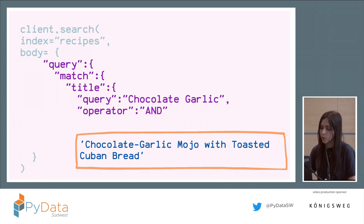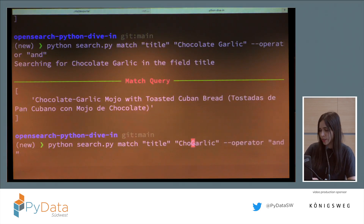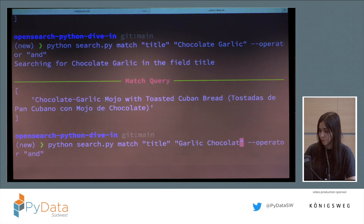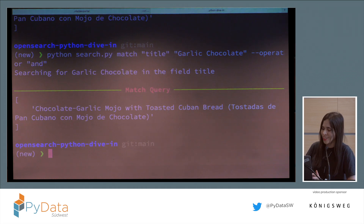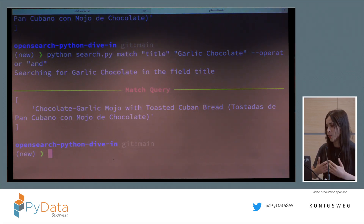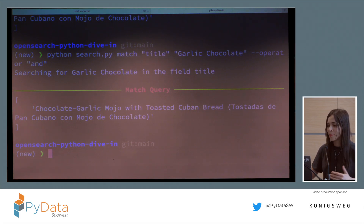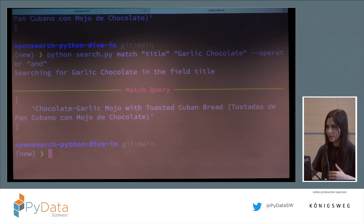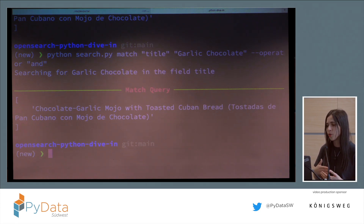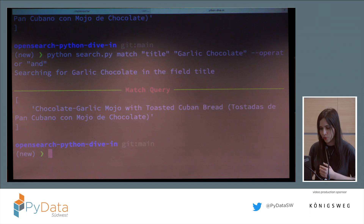Coming back to the code: if we swap the positions of garlic and chocolate, we can see that match does not care about the order of words. But sometimes order does matter — for example, if you're looking for someone's name and you swap the order, you might find someone else. In that case, you'd use the match phrase query.